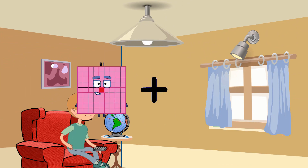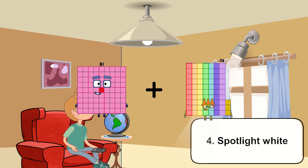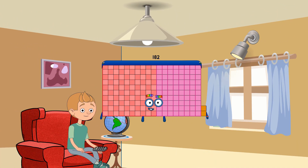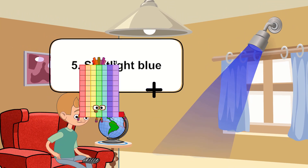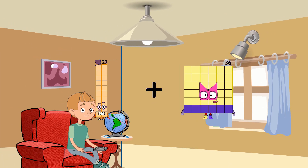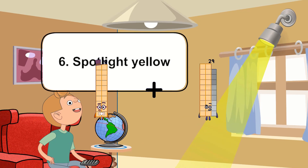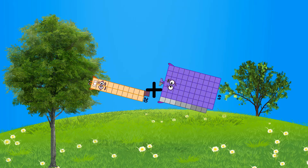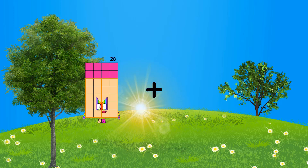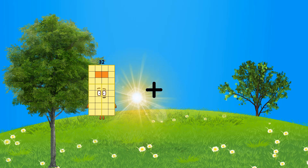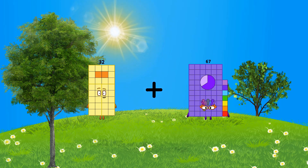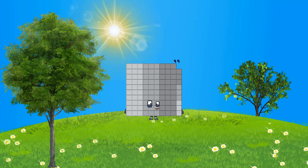81 plus 101 equals 182. 20 plus 69 equals 89. 32 plus 67 equals 99.